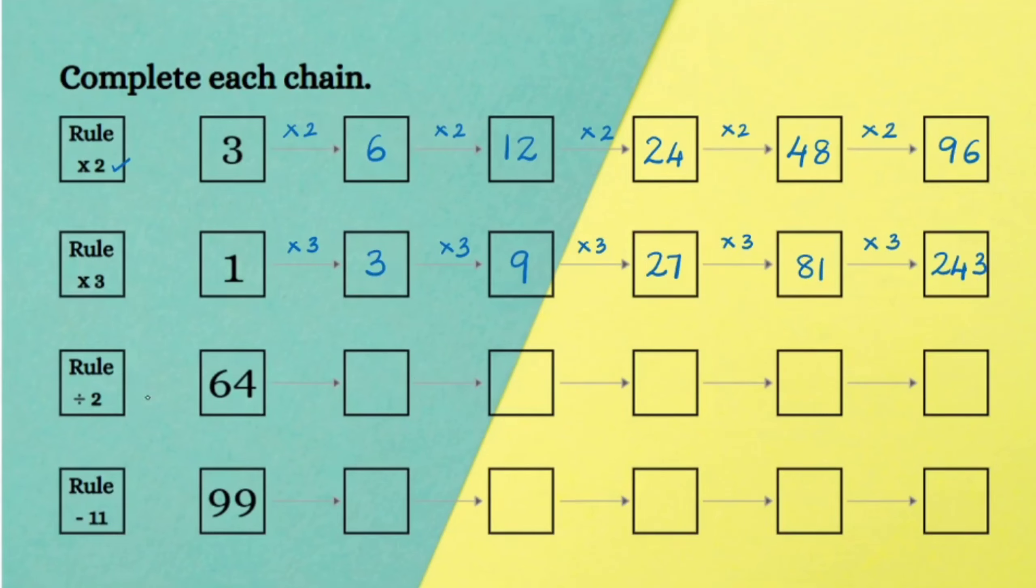The next rule is divide the number by 2: 64 divided by 2 is 32, 32 divided by 2 is 16, and so on. And the last question, the rule is you are subtracting 11: 99 minus 11 is 88, 88 minus 11 is 77, and so on.